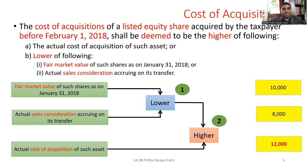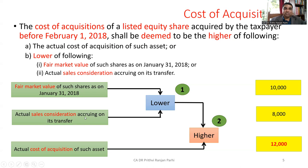For part (b), we have two sub-parts: first is the fair market value of such shares as on January 31st 2018, and second is the actual sales consideration accruing on its transfer. We take the lower of these two, and that lower figure is compared with the actual cost of acquisition — and we take the higher. So in two steps we complete the computation of cost of acquisition for shares acquired before February 1st 2018.